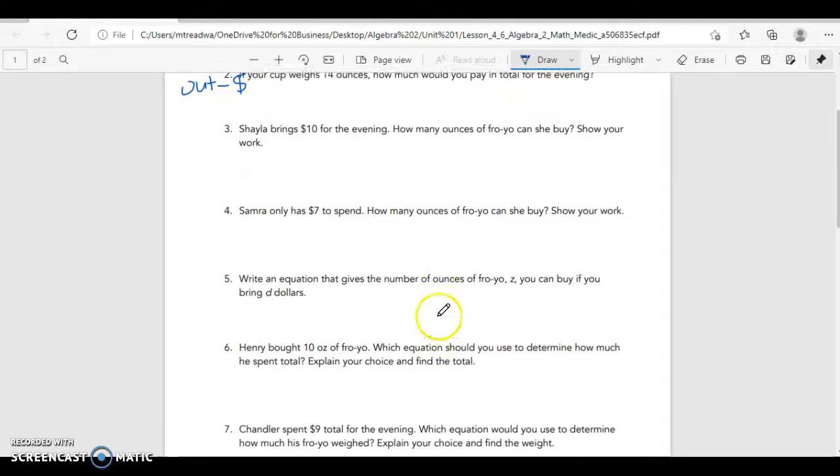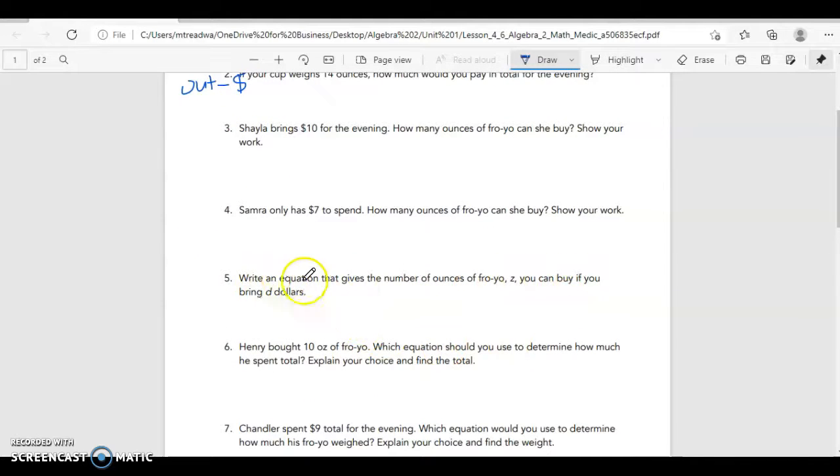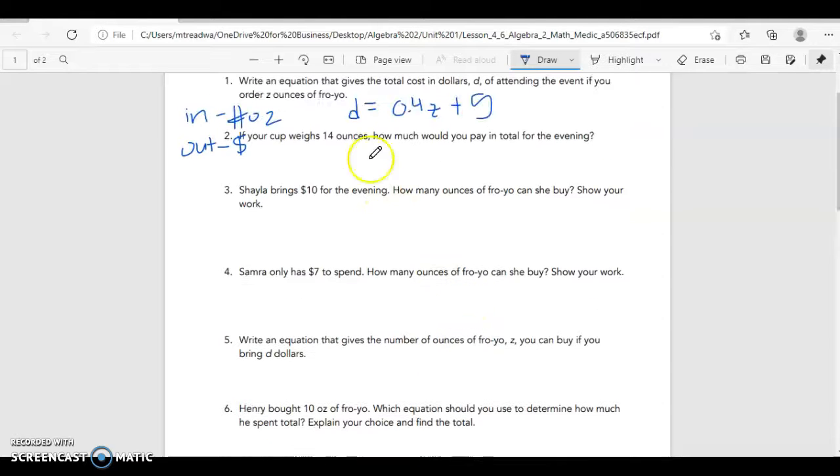And if we go down to number 5 here, we're writing the equation where we want to find out how many ounces of frozen yogurt we can get based on the number of dollars. And that's actually the inverse of this initial function. So that would be D minus 5 divided by 0.4, and that gives us our ounces. So in this one, our inverse, our input in this case is the money. Our input is the money and our output is the number of ounces. So when we take the inverse we are swapping the input and the output. So in the initial function our input was ounces, our output was money. In the inverse our input is money, our output is ounces.